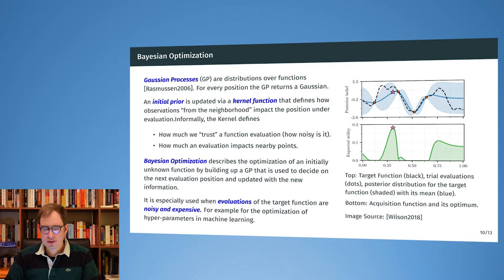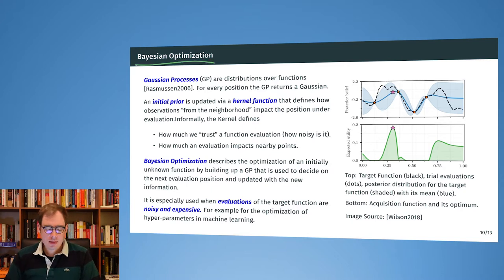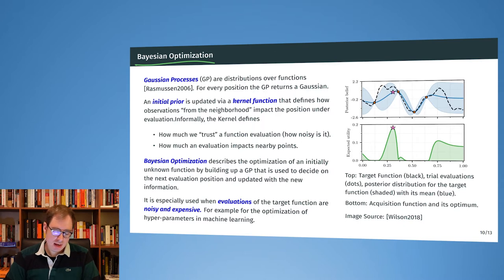There are now methods for optimizing in a setting where the evaluation comes out noisy. This is very handy, and also in machine learning there is a popular term now: Bayesian optimization. Bayesian optimization is the application of Gaussian processes to optimize noisy functions.